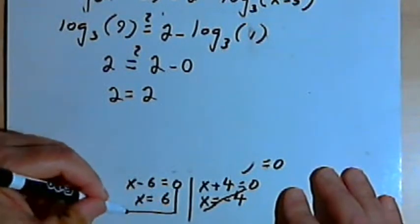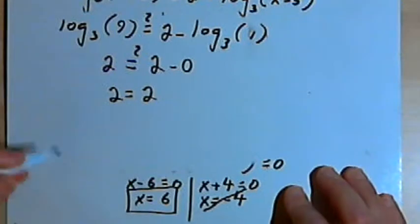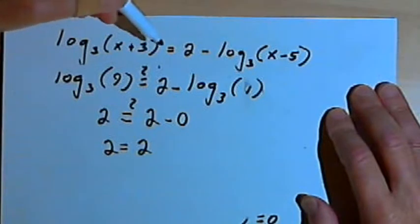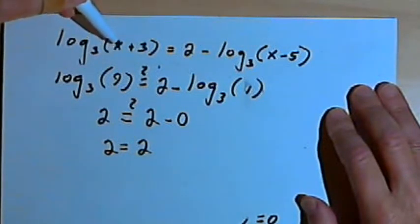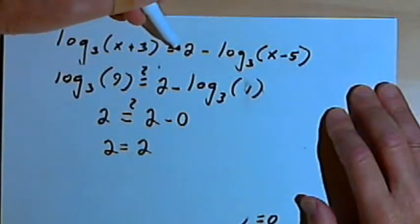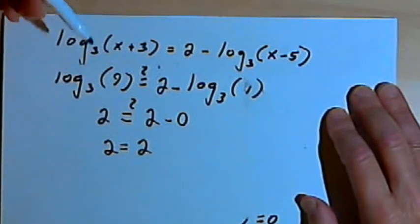So x equals 6 is going to be the answer we want to keep. So for this one, it was really pretty much like the first one, except we had to set it up. We had to get the logs on one side and then combine those logs into one log. We have them equal to some constant. We convert to exponential form and then we solve it from there.